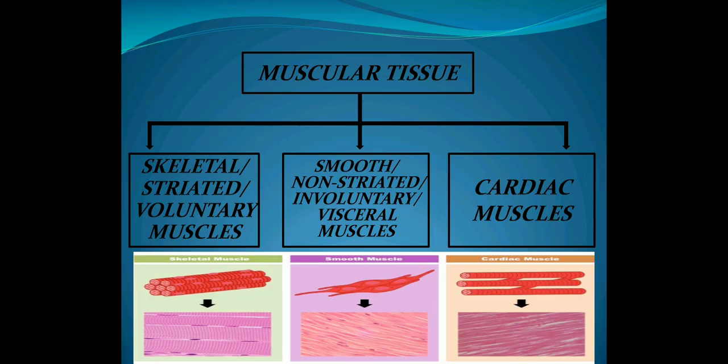The second type is smooth muscles, also called non-striated muscles, involuntary muscles, or visceral muscles. Non-striated means striations are absent — no dark or light bands are visible. They are called involuntary because they help in performing involuntary activities, and they are called visceral muscles because they are found on visceral organs. The third type is cardiac muscle, which is present on the heart and is a special type of muscle.